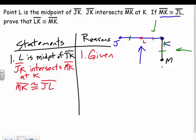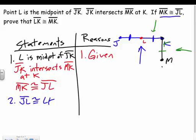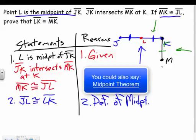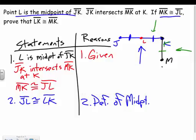Why are JL and LK congruent? Because L is the midpoint — so my reason is the definition of a midpoint. If a point is the midpoint, then the two segments it creates are congruent, and I can state that. So I used that L is the midpoint to write down this statement, using the definition of a midpoint to get there.